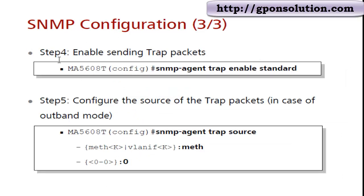To enable sending trap packets: SNMP agent trap enable standard. To specify the source of trap packets in outbound mode: SNMP trap source management 0.